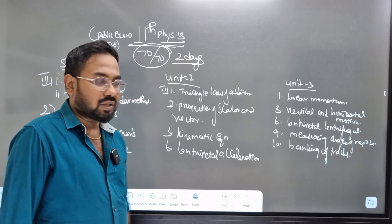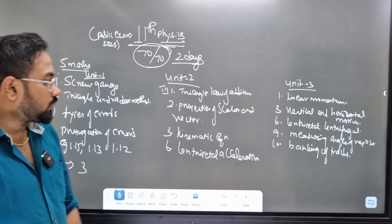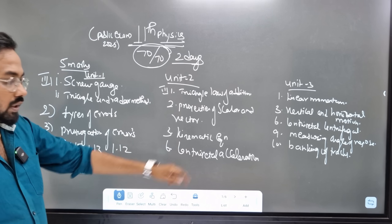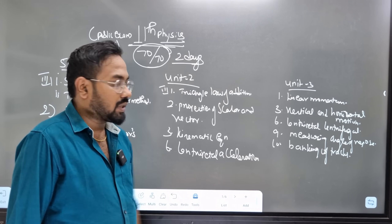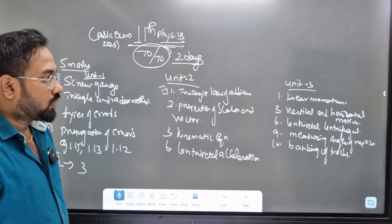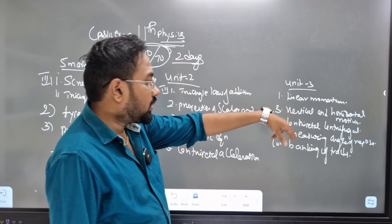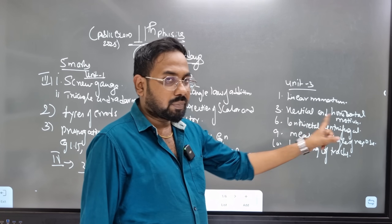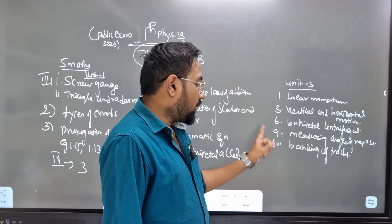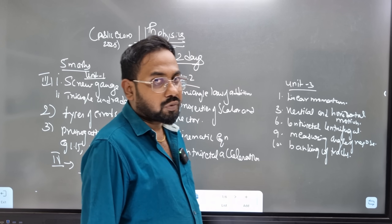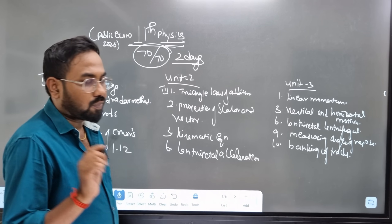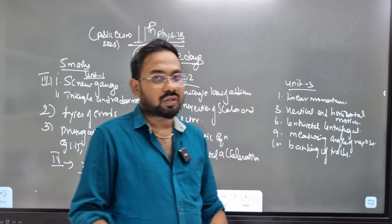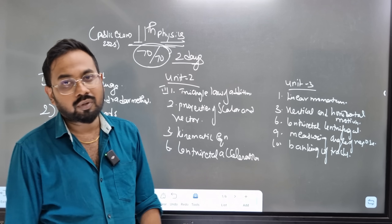Unit 2 covers triangle of addition, properties of scalar and vectors, and kinematic equations. The third topic is centripetal acceleration. Unit 3 covers linear momentum. The third question is about vertical and horizontal motion, centripetal and centrifugal, and the measurement of angle of repose. There are two questions on this.